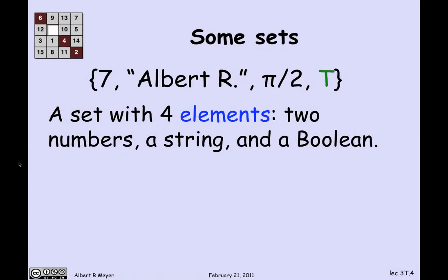A standard and simple way to describe a set is by writing out its elements, listed and separated by commas within curly braces, indicating we're treating this collection as a set. This is an example of a set with four elements: two numbers, one character string of length 9 (including the period and a blank), and a Boolean truth value, true.